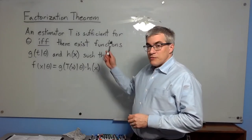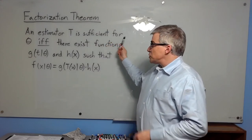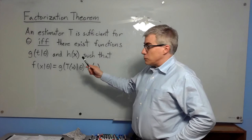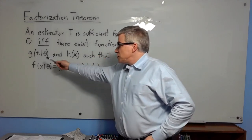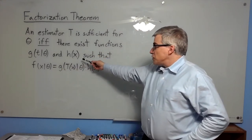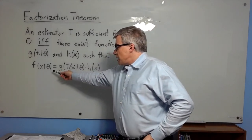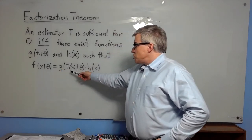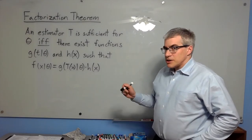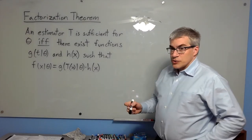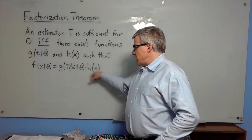The factorization theorem says that an estimator t is sufficient for theta if and only if there exist functions g of t and theta, and h of x, such that f of x given theta equals g of t given theta times h of x. That's certainly hard to understand. When first looking at it, one might think: doesn't everything factor that way, if you just make h of x equal to 1?